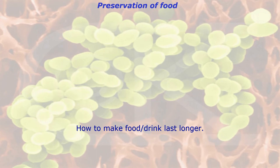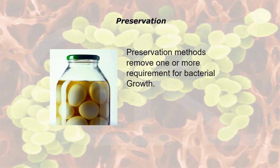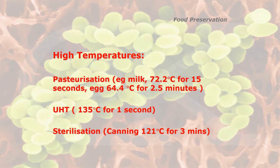Preservation of food — how do you make food or drink last longer? Preservation methods remove one or more requirements for bacterial growth: food, moisture, warmth, or time. High temperature food preservation includes pasteurisation — for example, milk is heated to 72.2°C for 15 seconds, and egg to 64.4°C for 2.5 minutes. Anything above 63°C is classed as a pasteurisation temperature. Ultra heat treatment is at 135°C for 1 second, and sterilisation with canning is at 121°C for 3 minutes or more.